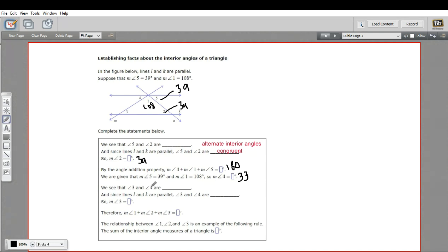And then it says we see that angles three and four are what? Well, three and four are another pair of alternate interior angles just using line M as the transversal. So alternate interior angles.